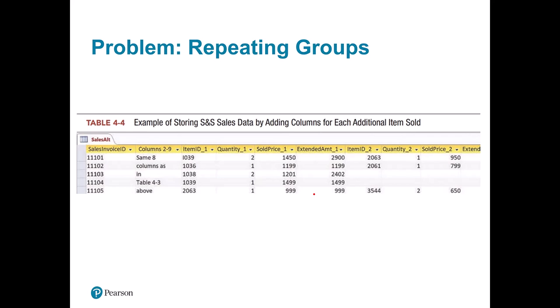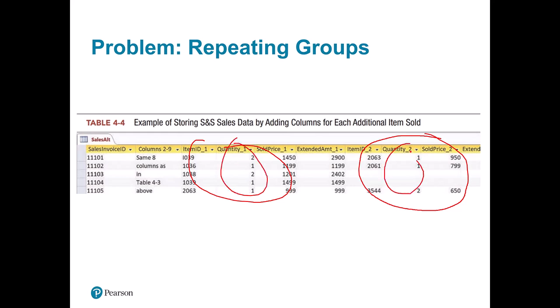Another problem we might have is repeating groups. Often when you start with a spreadsheet you have a simple structure — one row per sale — but then someone wants two items for a sale and people make repeating groups, like item one and item two as separate columns. The problem is if you try to sum all the sales you have to add up quantity one and quantity two separately, and find non-null values for quantity two. This makes things much more complicated. Instead, what you really need is a sales table that stores one row per item.